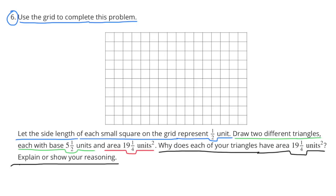Problem 6: Use the grid to complete this problem. Let the side length of each small square on the grid represent one-half unit. Draw two different triangles, each with base five-and-one-half units and area of 19-and-one-fourth units squared. Why does each of your triangles have area 19-and-one-fourth units squared? Explain your reasoning.